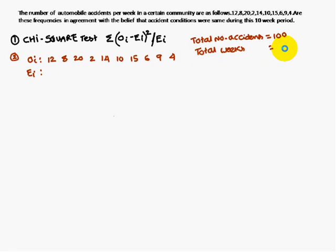Number of weeks is 10, therefore average accidents per week is 100/10 = 10. This is the expected frequency. The expected number of accidents per week is 10, and the observed number of accidents per week varies.